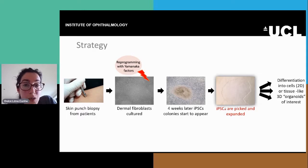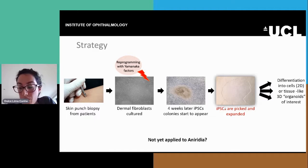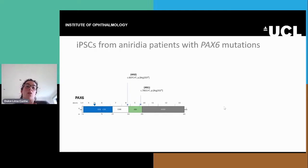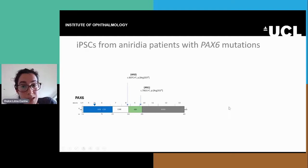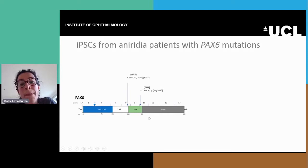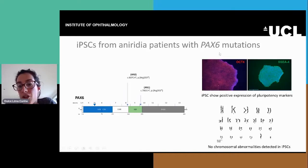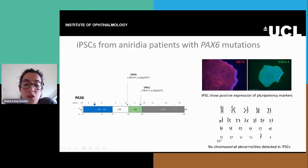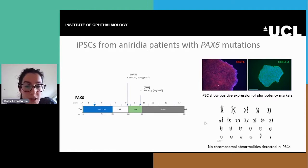Although these cells are now widely used for a big range of genetic diseases, as far as we know, this has not been applied to aniridia yet. So this is what we've done. We have generated two iPSC lines from aniridia patients carrying PAX6 mutations — two different mutations affecting different parts of the gene. We've generated and validated them by showing positive expression of pluripotency markers, as well as routinely checking their chromosomes to make sure there are no abnormalities from culturing.